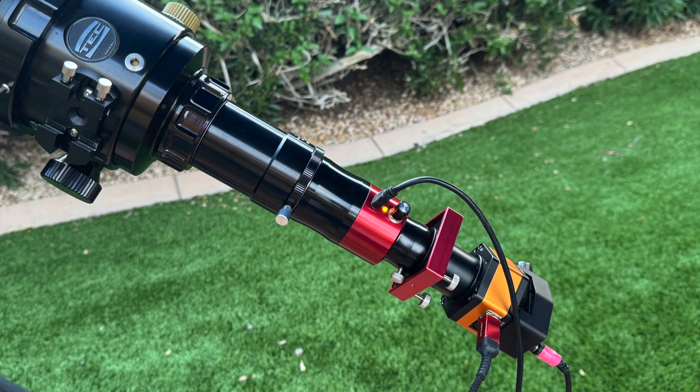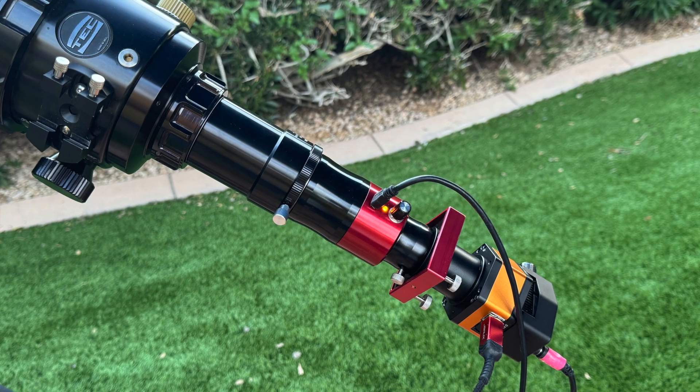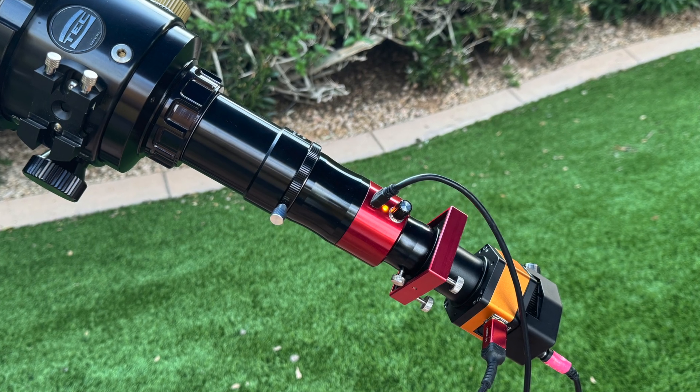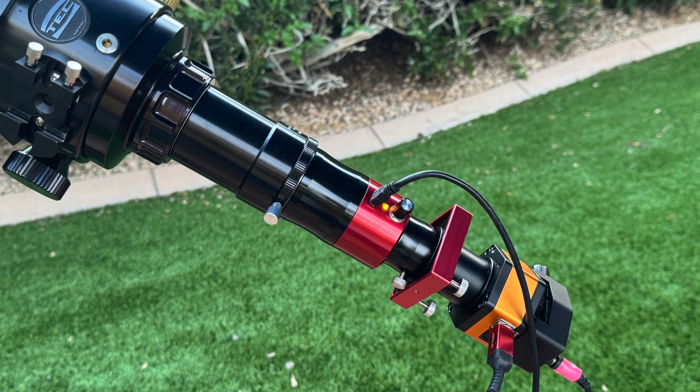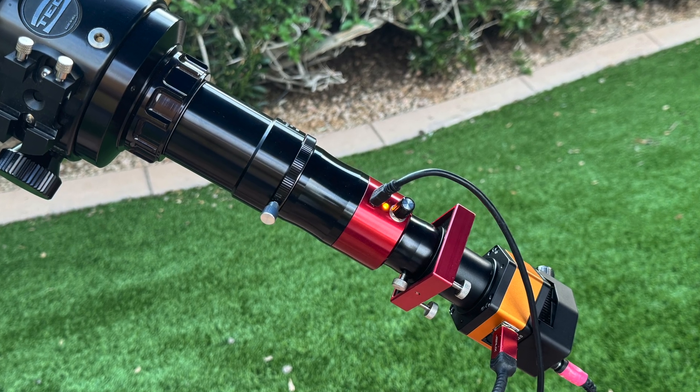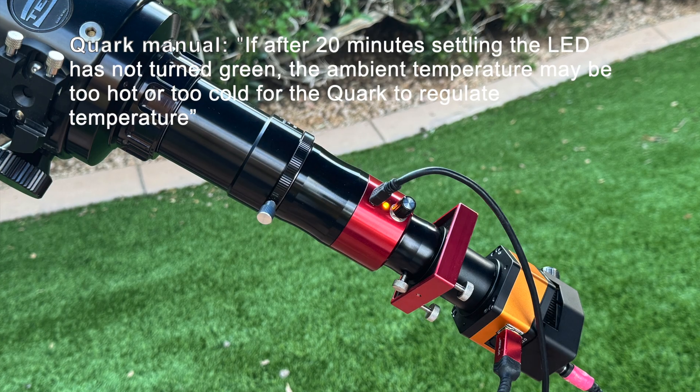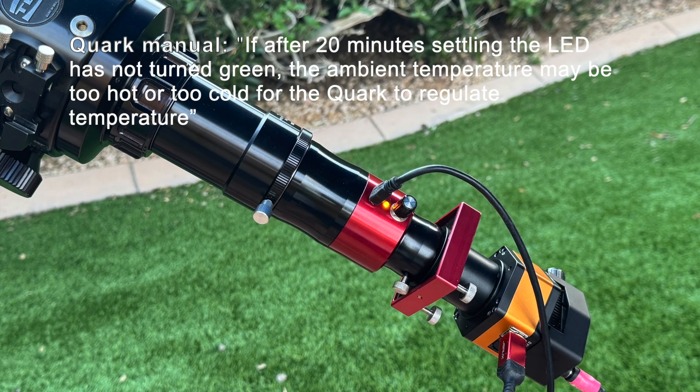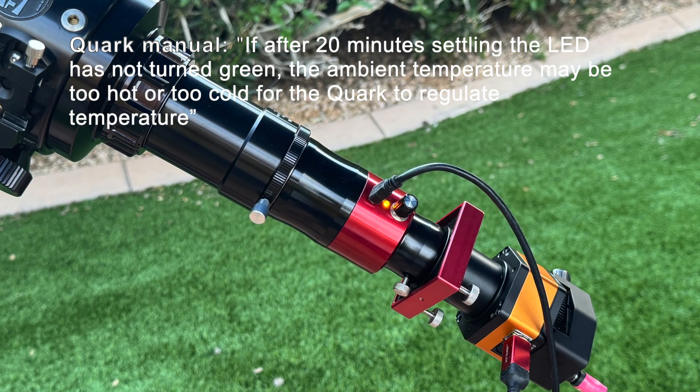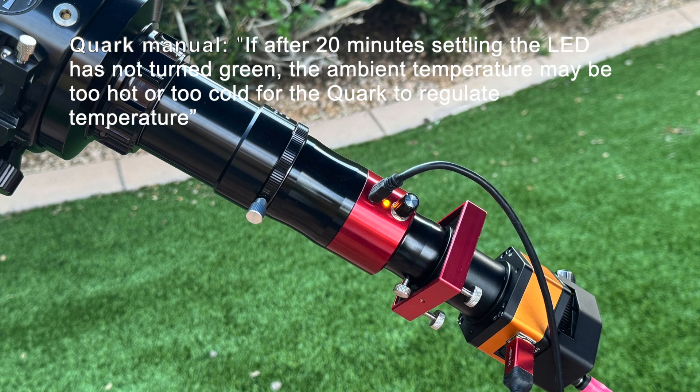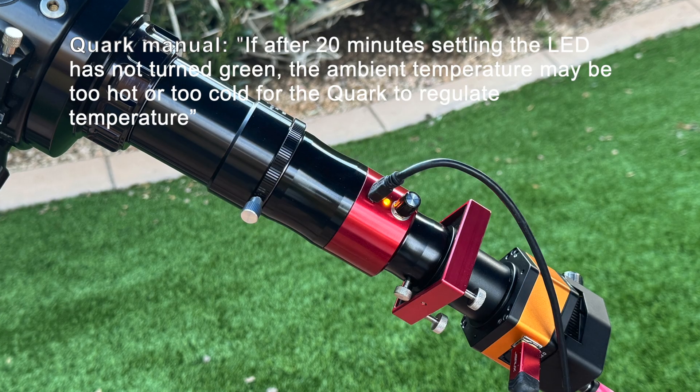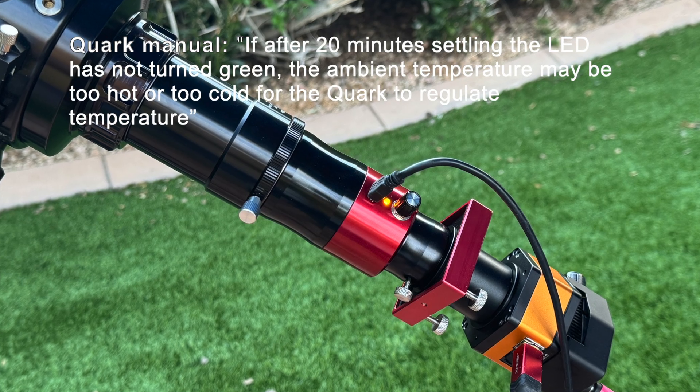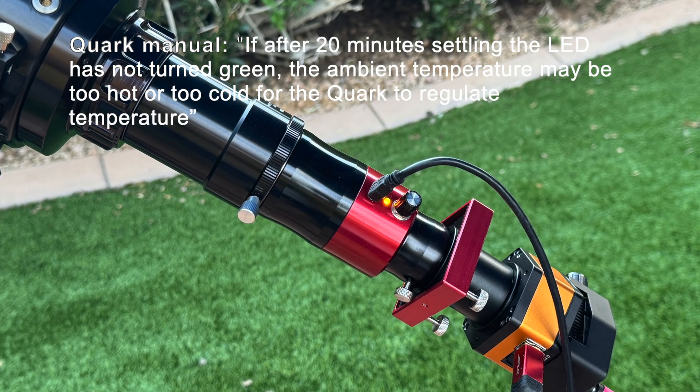If it's very cold, it may never come on band. And some users report in hot climates, it's difficult to keep the unit on band during long sessions as the telescope heats up. The Quark is known to have limitations with respect to temperature extremes. Their manual says, I quote, if after 20 minutes settling the LED has not turned green, the ambient temperature may be too hot or too cold for the Quark to regulate temperature.